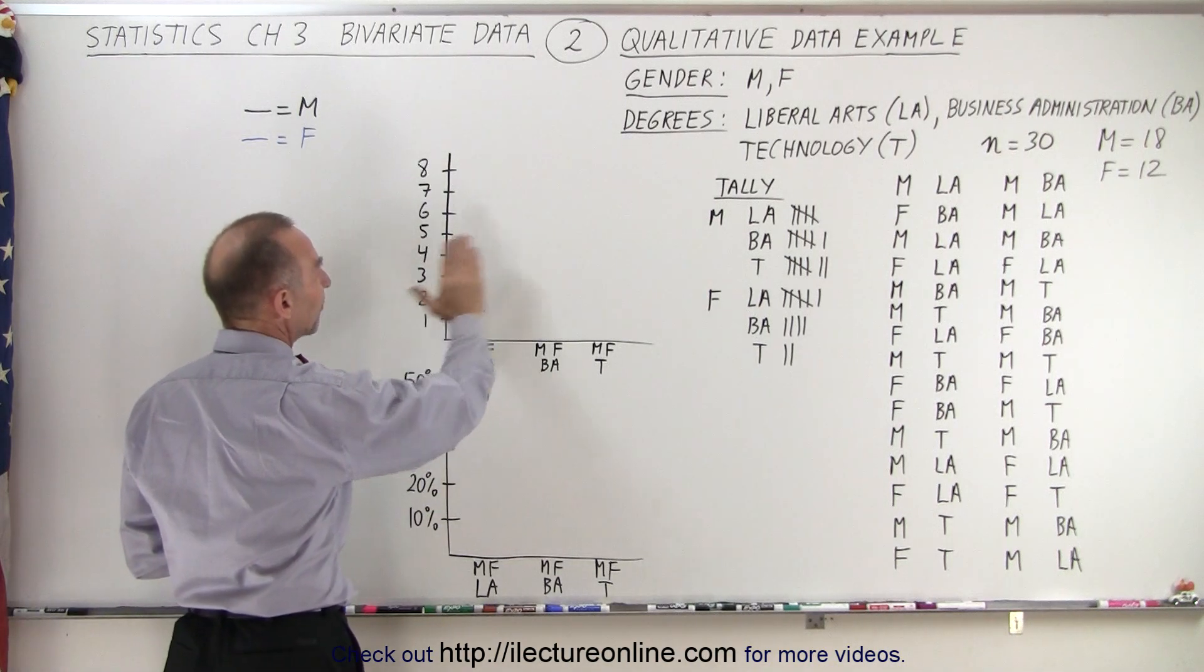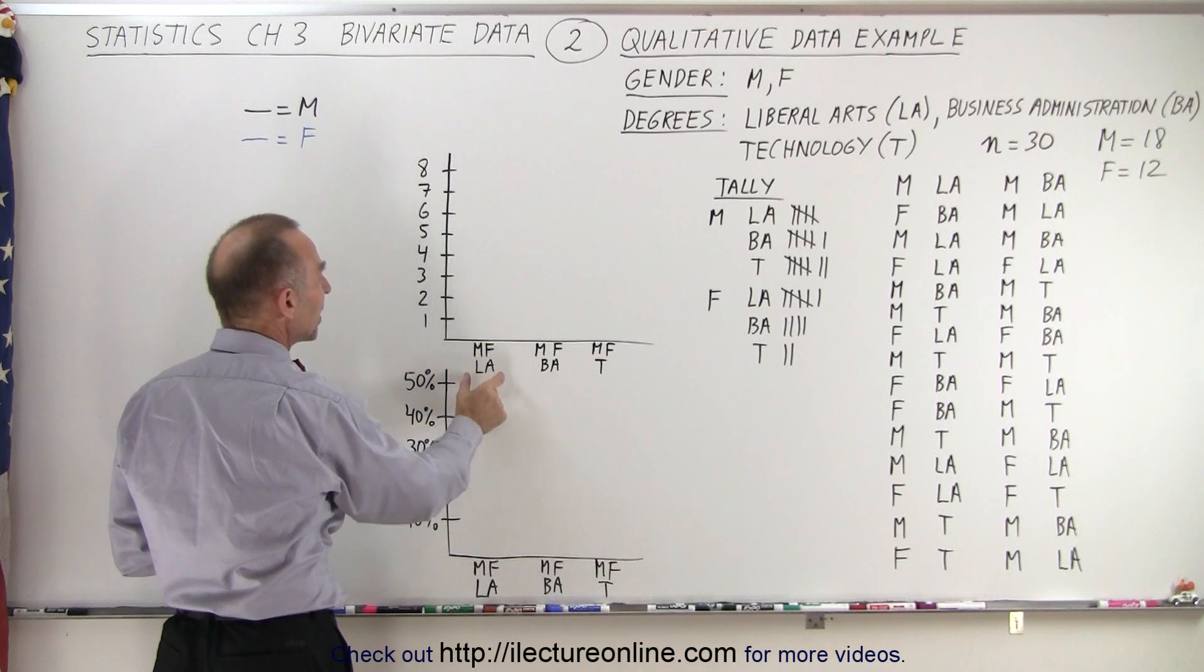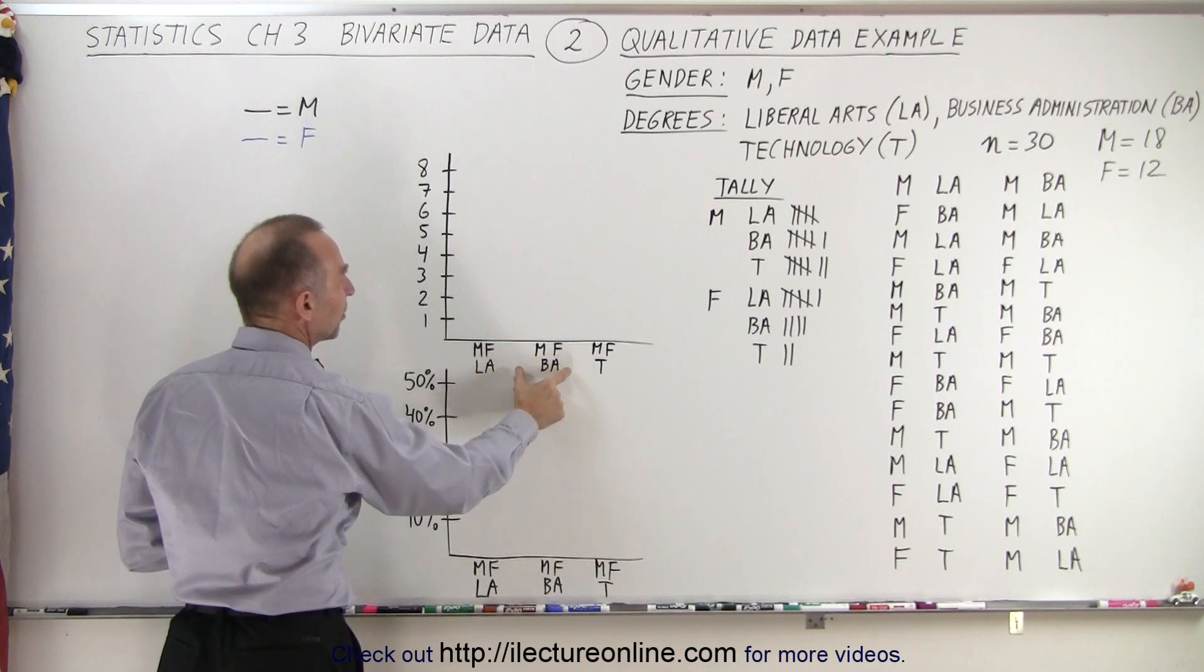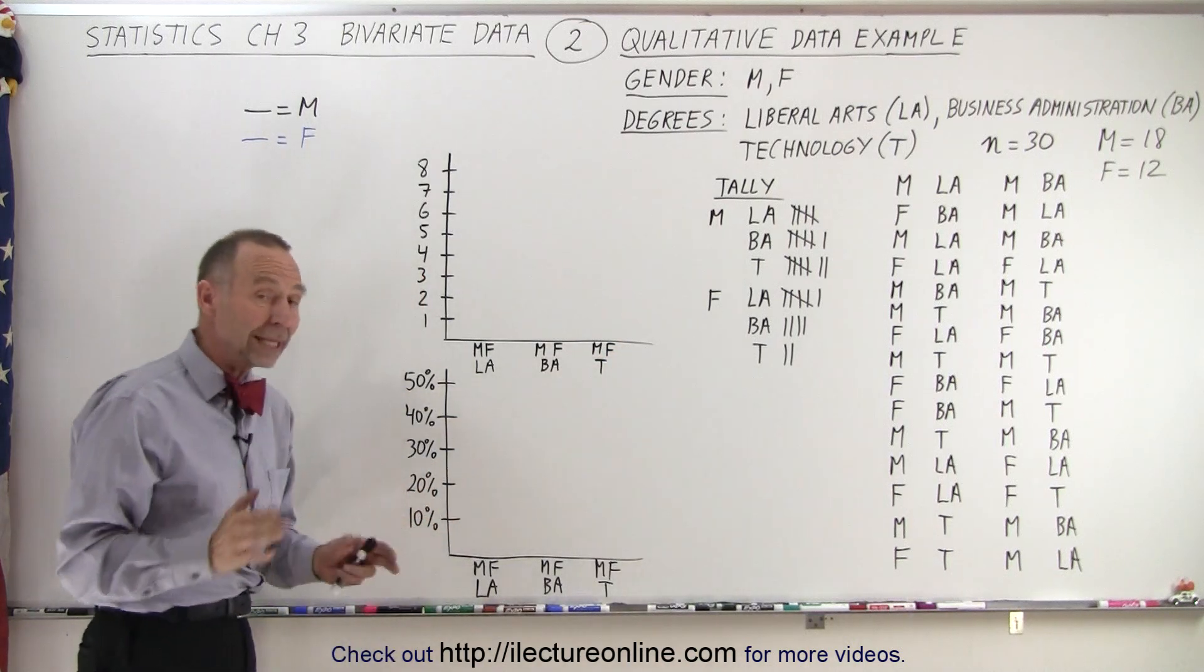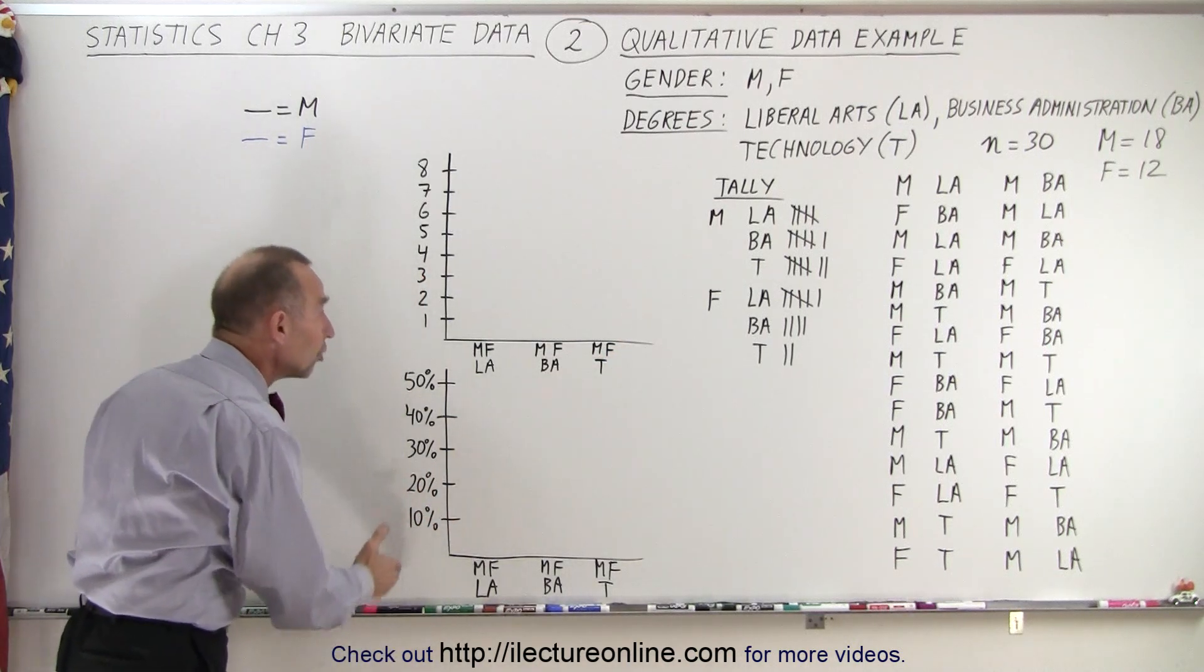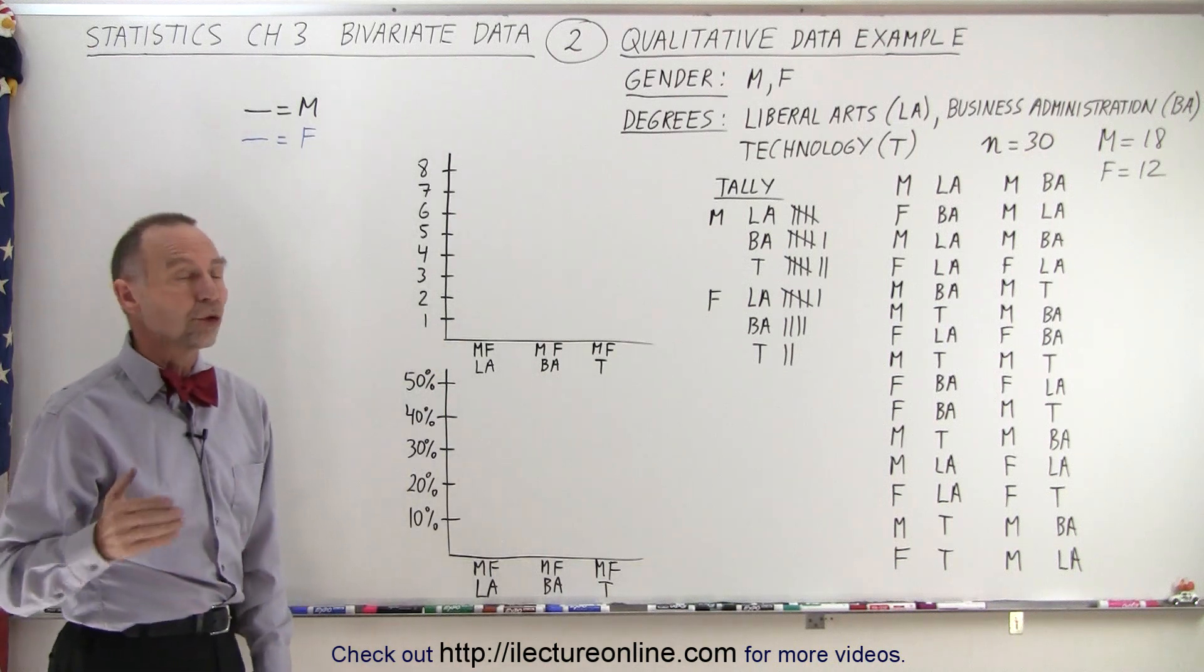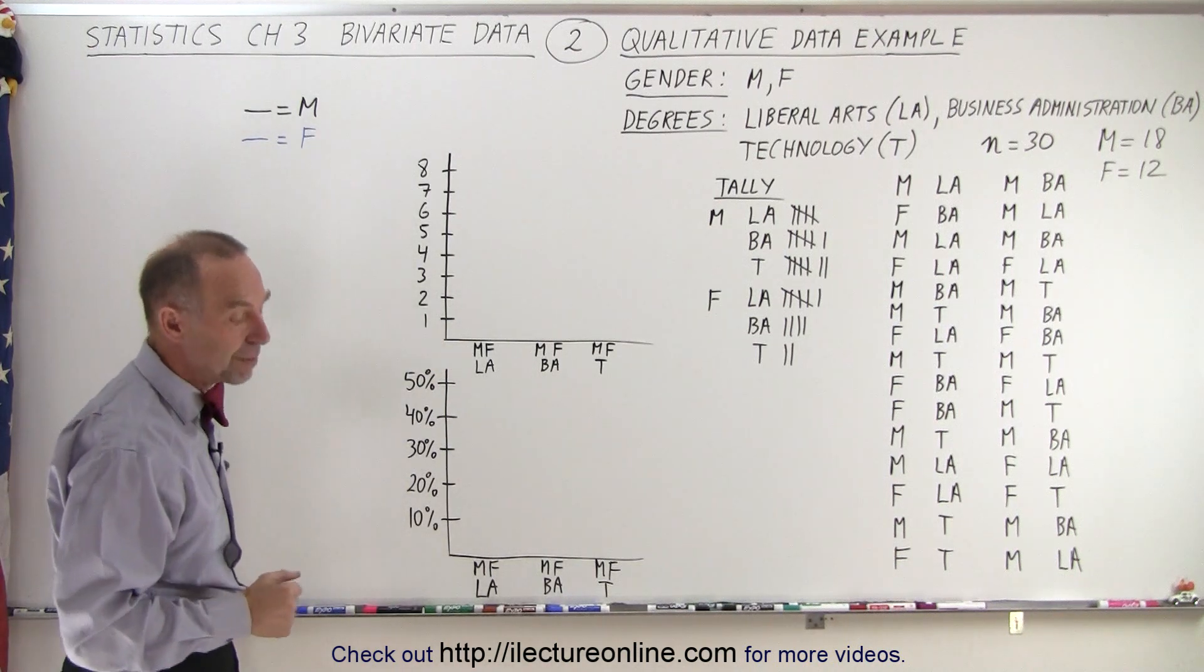First of all, we're just going to strictly graph them by the number: Male-female Liberal Arts, Male-female Business Administration, Male-female Technology. But then we're going to do it again by taking the percentage as the percentage of the total number of males and total number of females.